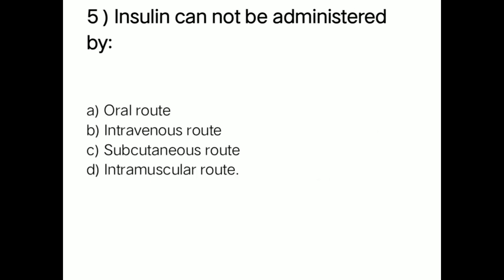Next question: insulin cannot be administered by — option A: oral route; option B: intravenous route; option C: subcutaneous route; option D: intramuscular route. Right answer is option A — oral route. Insulin cannot be administered by oral route; it should be given by intravenous, subcutaneous, or intramuscular route.